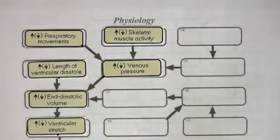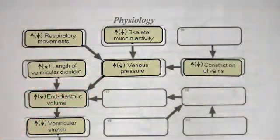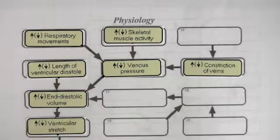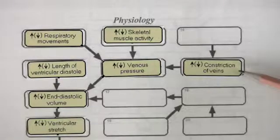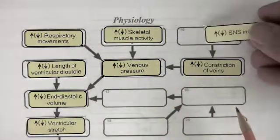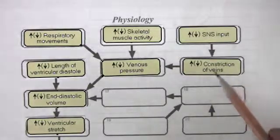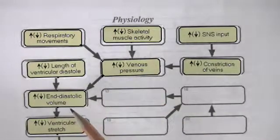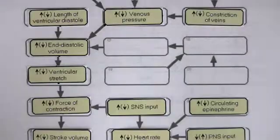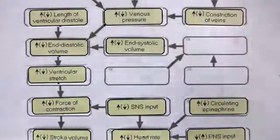The third cause of an increase in venous pressure is constriction of the veins. Blood vessels are supplied by the sympathetic nervous system, and the sympathetic nervous system causes constriction of vessels. Even though the veins are thin-walled, they do have smooth muscle in their walls. They do constrict under the action of the sympathetic nervous system, and that would lead to an increase in venous pressure. So an increase in sympathetic input to the veins leads to constriction of veins, leads to a rise in venous pressure, and that promotes an increase in the end-diastolic volume. There's one other factor, a rather important factor, that affects end-diastolic volume, and this is end-systolic volume.